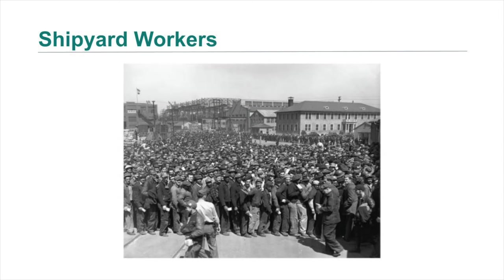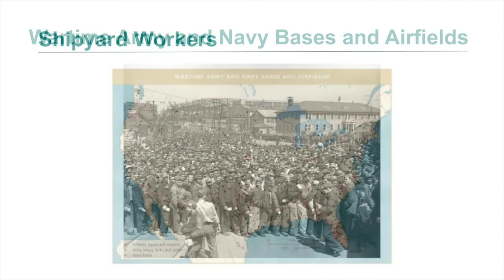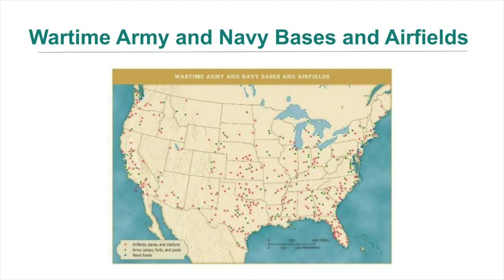War-related production essentially ended the Great Depression. In this photograph from 1942, workers wait to be paid at a Maryland shipyard. As this map indicates, the military and naval facilities built by the federal government during World War II were concentrated in the South and West, sparking the economic development of these regions.